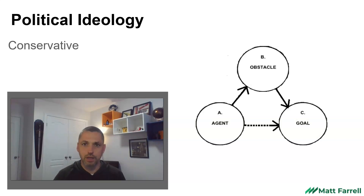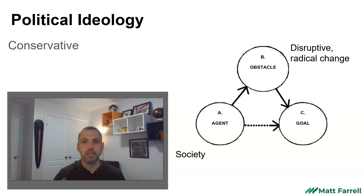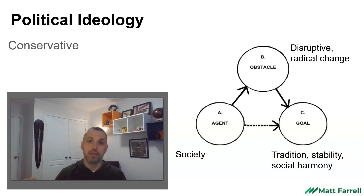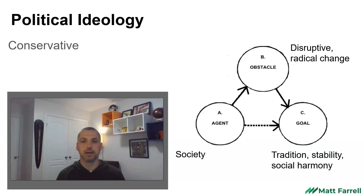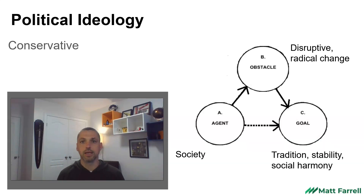For conservatives, the agent would be society — a nice, harmonious, well-ordered society. The things standing in the way would be radical change and disruption, things happening in society that are changing the traditional harmonious order. The goal is tradition, stability, and social harmony, but all of those disruptive forces are standing in the way. So if you want to understand conservative ideology, think: what is the agent, the obstacle, and the goal? Conservatives want a stable and harmonious society; the obstacle is change that is too rapid or disruptive.